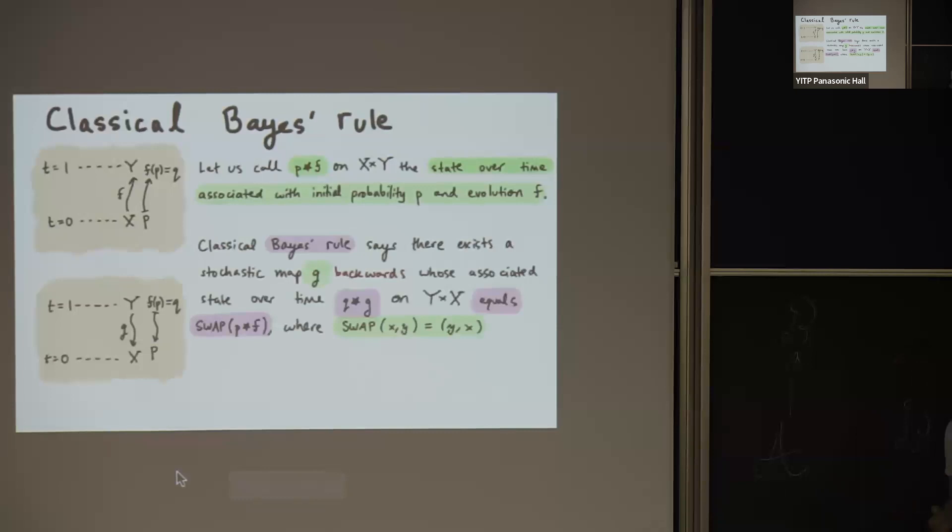whose associated state over time, which is now something on Y cross X, which is not exactly X cross Y, because we're flipping the directionality of time here. But those two states over time are equal to each other after we apply that time swap. And if you go through the math, it literally reproduces standard Bayes' rule, the probability of Y given X times the probability of X equals the probability of X given Y times the probability in Y.